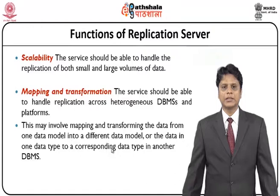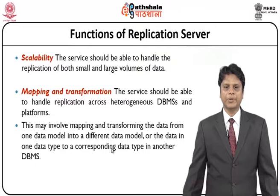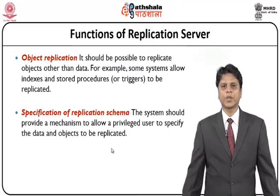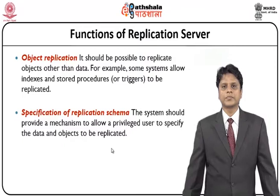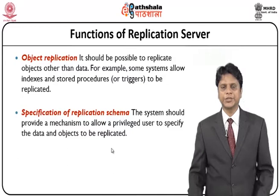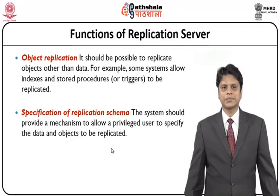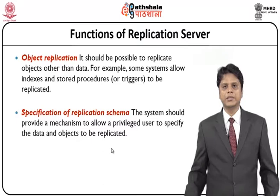This may involve mapping and transforming data from one model to a different data model, or data in one data type to a corresponding data type in another DBMS. Another functionality is object replication, where it should be possible to replicate objects other than data. For example, some systems allow indexes and stored procedures to be replicated. Replication not only covers data replication but can also transfer stored procedures, views, functions, and indexes — object replication replicates the entire object including indexing mechanisms and stored procedures.